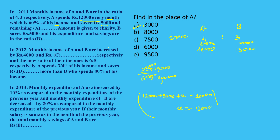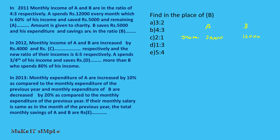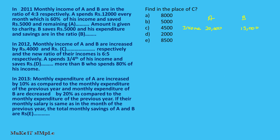B saves 5,000 and his expenditure and savings are in a ratio. B's income is 15,000 and B saves 5,000. So B's expenditure is 10,000. The expenditure to savings ratio for B is 2 to 1.